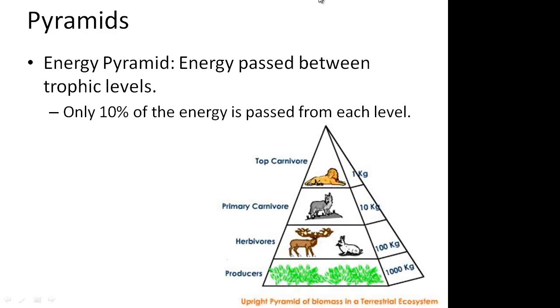Besides our food chains and food webs, we can also use pyramids to represent our energy flow. We have an energy pyramid, which shows how energy is passed between the different trophic levels. Remember, our producers, our herbivores, our carnivores. The important thing to remember, only 10% of the energy is passed on from each level.